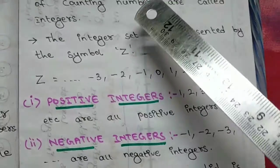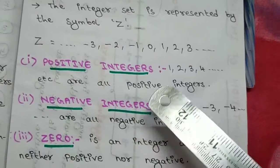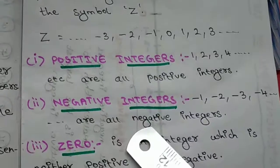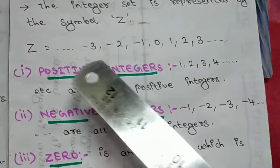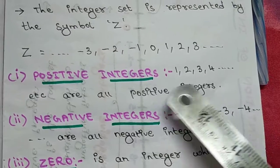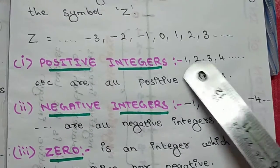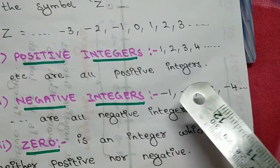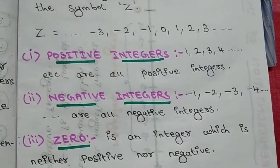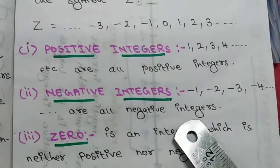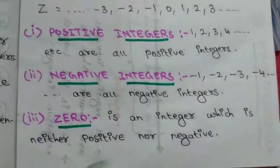In integers, you will come across three terms: positive integers, negative integers, and 0. Positive integers are 1, 2, 3, 4, 5 — with positive signs. Negative integers are minus 1, minus 2, minus 3, and so on. And 0 is an integer which is neither positive nor negative.